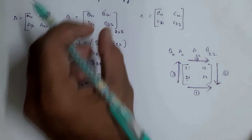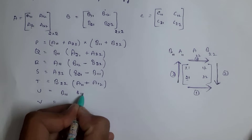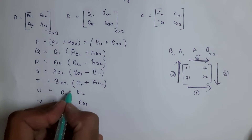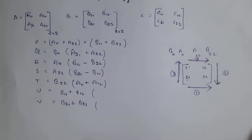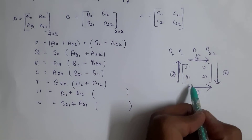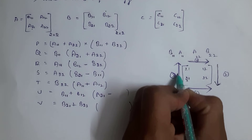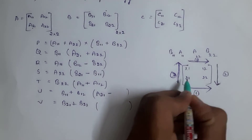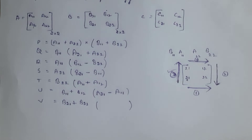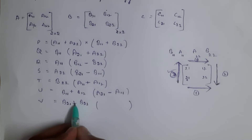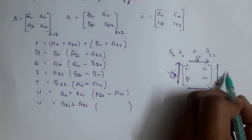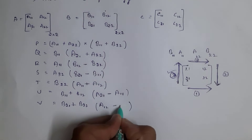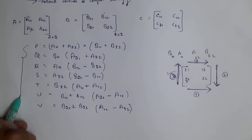Next we need to find the values of U and V. Write matrix B: b11, b12, b21, b22. For U: following direction three, b is in place so for A we write minus — giving (a21 − a11) × (b11 + b12). For V: following direction two, we write (a12 − a22) × (b21 + b22). Now we have all values from P to V.